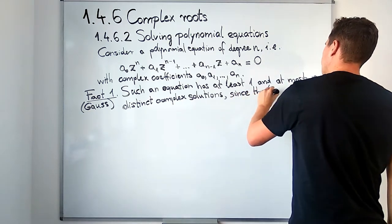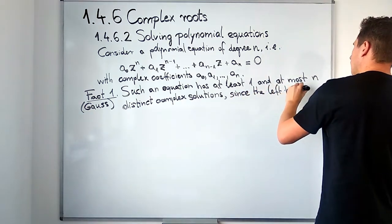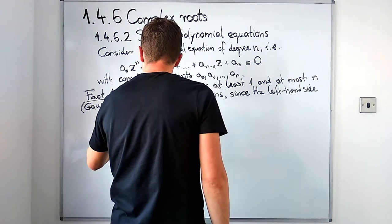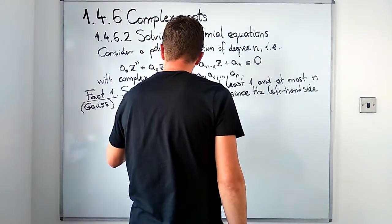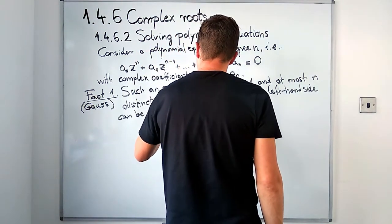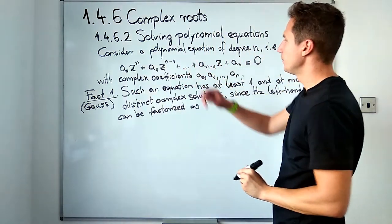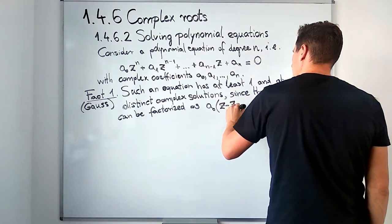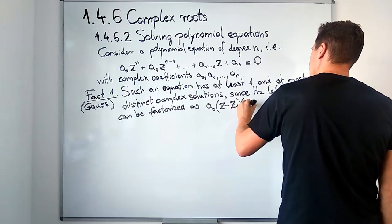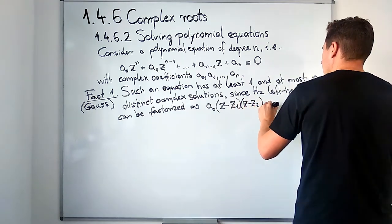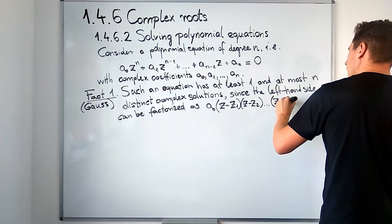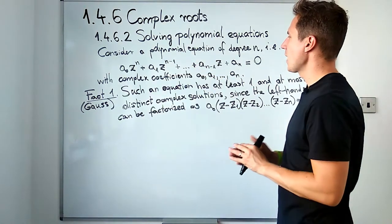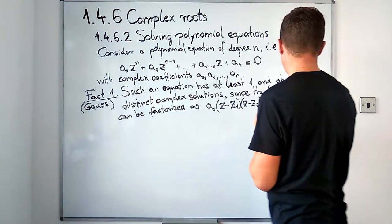And this is true since the left hand side of our equation can be factorized as follows: a₀ times (z - z₁) times (z - z₂) all the way to (z - zₙ). We have these factors which, if we expand, we would get back our original left hand side, that polynomial on the left hand side.